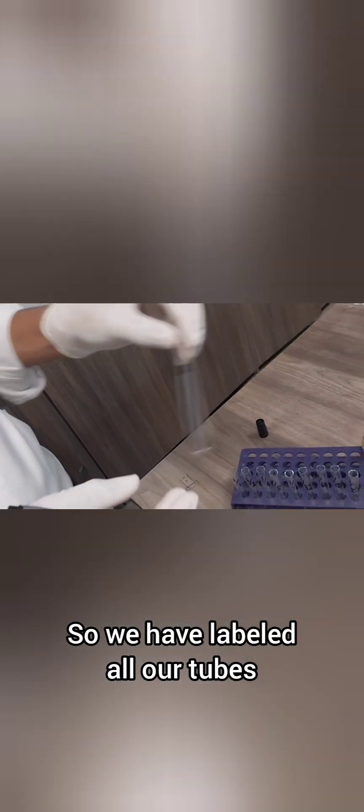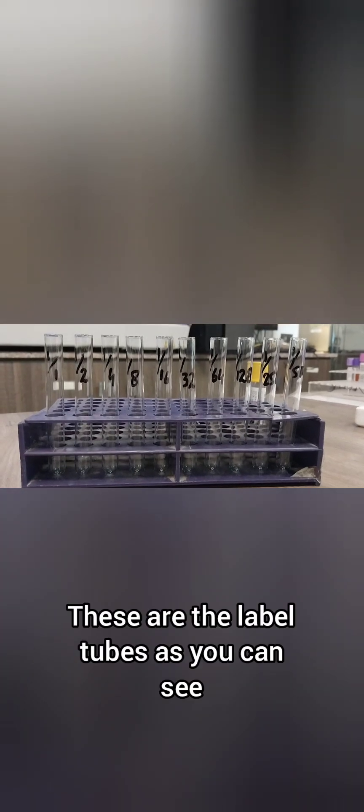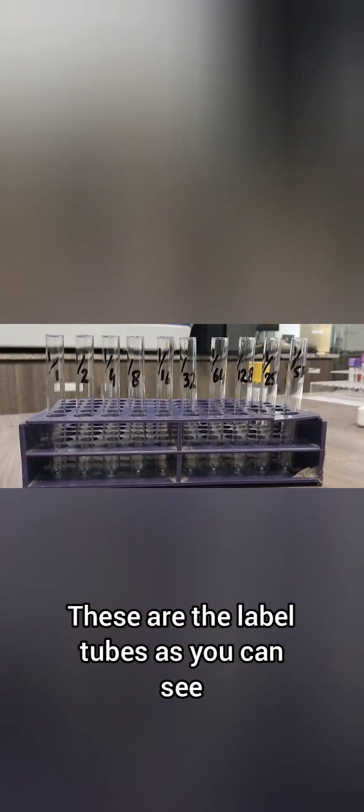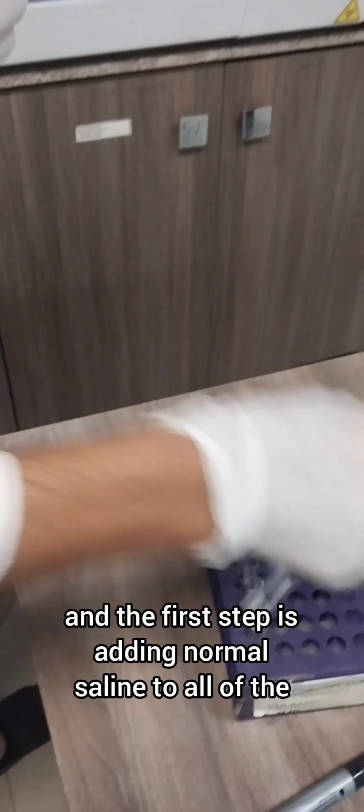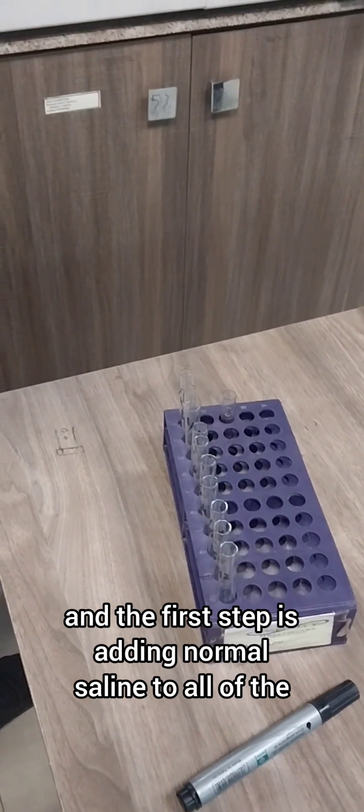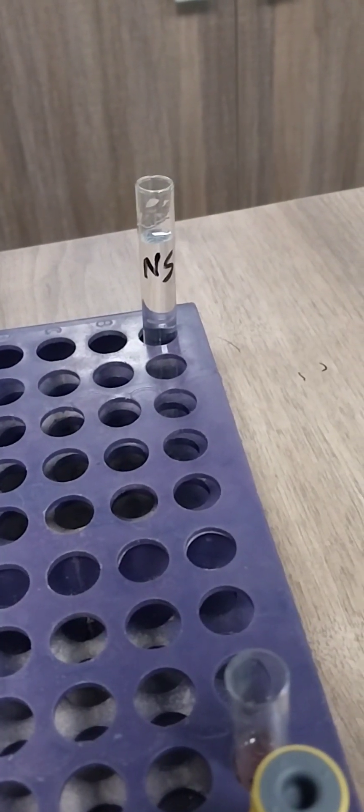Here we go, this one is 512, 256, and the last one is 512. So we have labeled all our tubes and now we do the first step. These are the labeled tubes, as you can see there are 10 tubes.